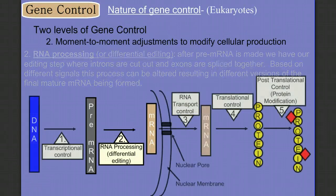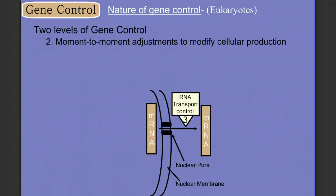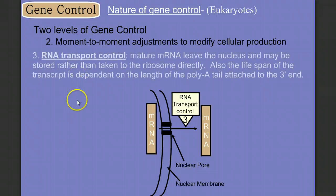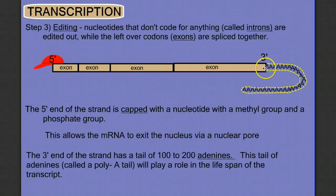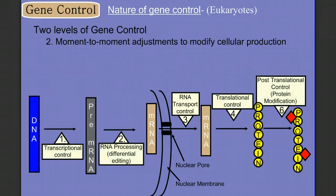After editing, the messenger RNA leaves the nucleus to go to the ribosome, but we can exert control here too — called RNA transport control. The mature RNA sometimes isn't used right away and can be stored. Another example of control at this stage is the length of the poly A tail. As discussed in our transcription video, the longer the poly A tail, the longer the transcript sticks around, meaning we can make more of the protein — that's another example of controlling gene expression.